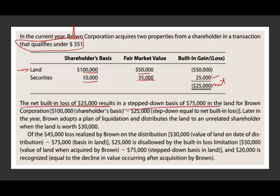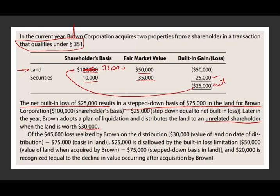This results in a step-down basis of $75,000 in the land for Brown Corporation. We're going to reduce the basis of the land to $75,000. Later that year, Brown adopts a plan of liquidation and distributes the land to an unrelated shareholder when the land is worth $30,000. We distributed the land — we already know it had a built-in loss — but the fair value of the land kept going down to $30,000. So how do we compute the loss? The proceeds we're going to receive is $30,000, the fair market value. The basis is $75,000. So our total loss is $45,000 — that's the loss realized.